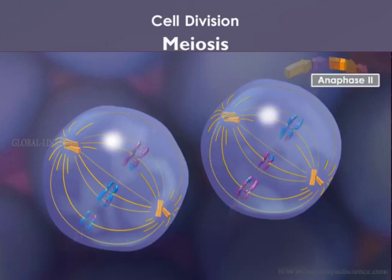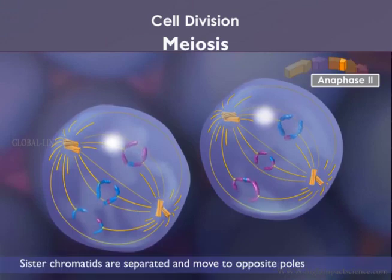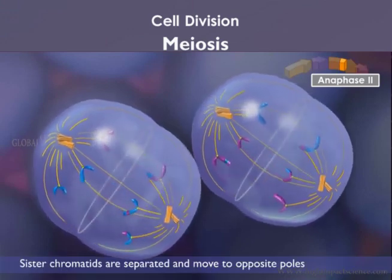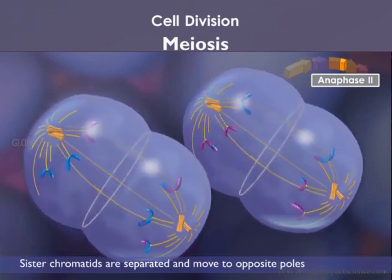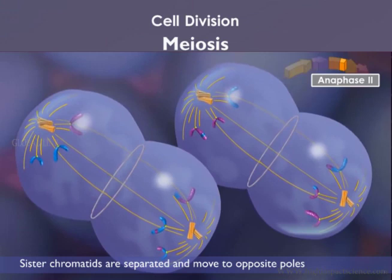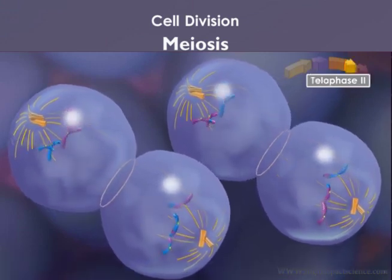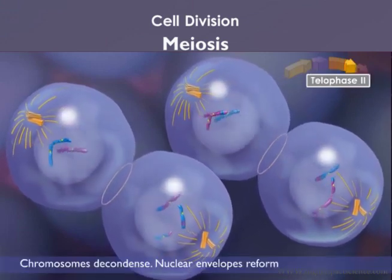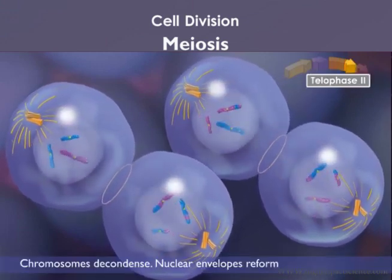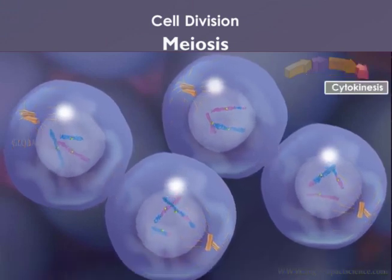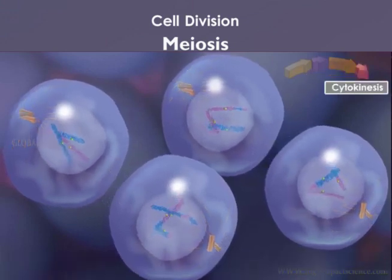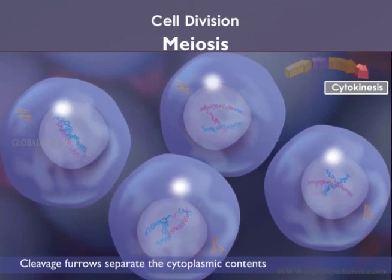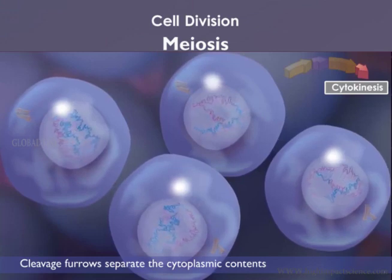During anaphase 2, sister chromatids are separated and move towards the opposite poles. The process ends in telophase 2 as the chromosomes decondense and the nuclear envelopes reform. Cytokinesis occurs and cleavage furrows separate the two daughter cells into four haploid daughter cells.